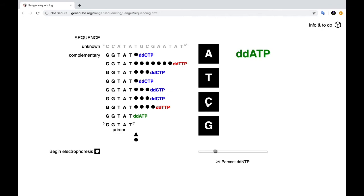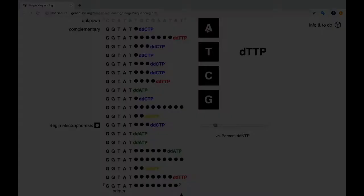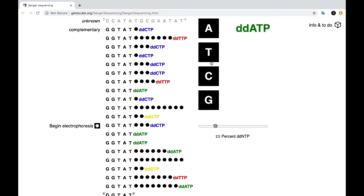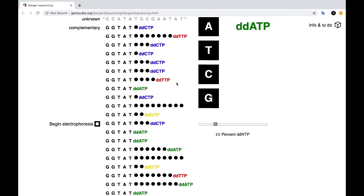Now eventually you will repeat this process so many times, as represented here by all of the different rows, that you'll end up with DNA fragments ranging from a length of just one nucleotide to the entire length of the piece of DNA that you're trying to sequence.